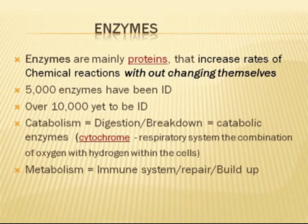So far we've identified 5,000 enzymes — 10,000 they say minimum are supposed to be identified. But just look at the two different types: catabolism and metabolism. Catabolism means it's breaking down. You've got enzymes that break down nutrients, substrates, and other proteins so you can utilize them. This is huge because just in the respiratory tract, cytochrome is an enzyme that breaks down oxygen and hydrogen so you're able to utilize the oxygen.